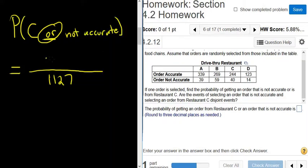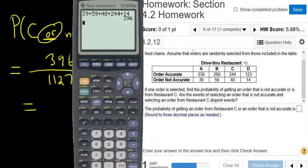396. So that number goes up top. So whenever you have an or in a table, that's how you do it. Let's type this in, see what the decimal is. 396 divided by 1127.